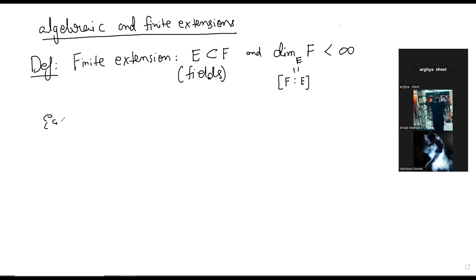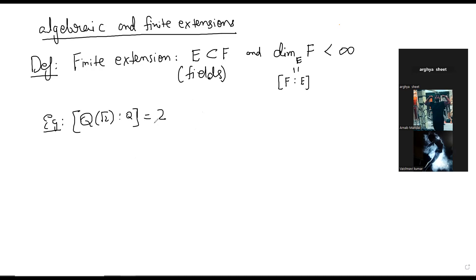Example: Q(√2) over Q. The dimension of Q(√2) over Q is 2. You can prove that. You should look for more and more examples — you should have a bag of examples. Look at any book; I am following Serge Lang's Graduate Algebra.